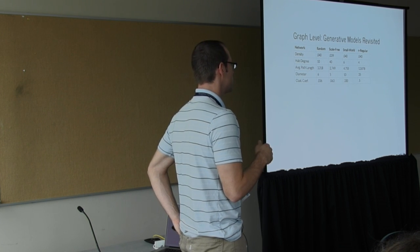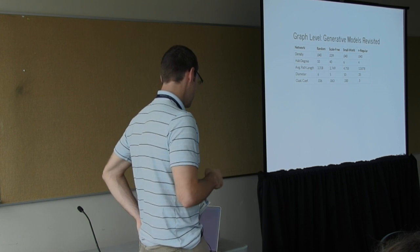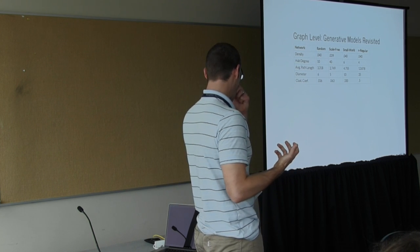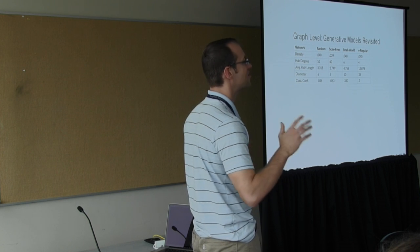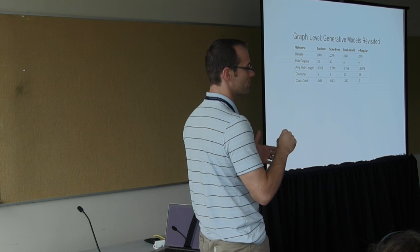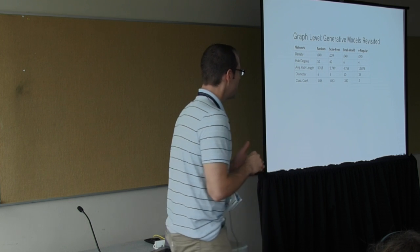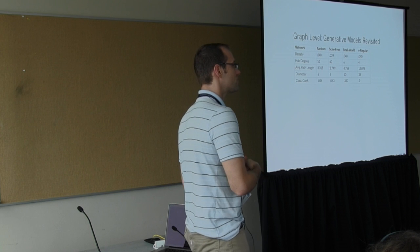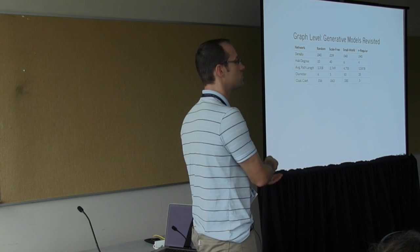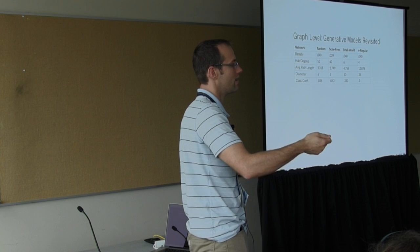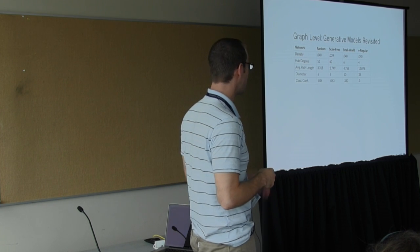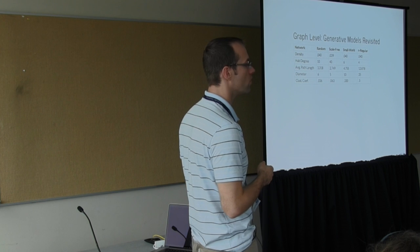He also is fairly famous in the world of social networks for establishing the small worlds theory. The idea is in a social network that they were all connected to one another by a relatively small number of hops. Six degrees being the popular notion. He demonstrated that by taking letters, getting letters together, and then giving them a target across the country. And say, give this letter to the person who you think is most likely to be able to get it as far as possible to that person.